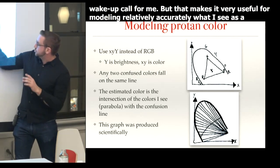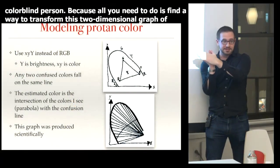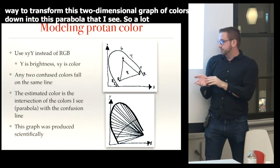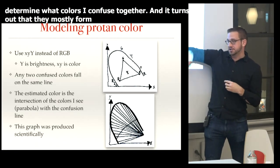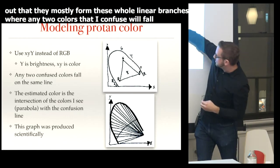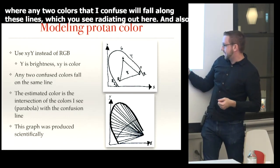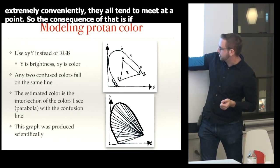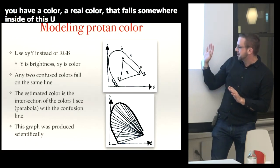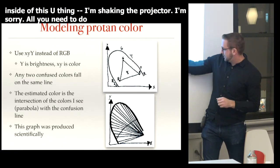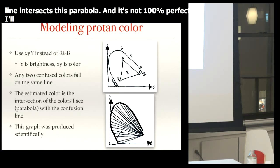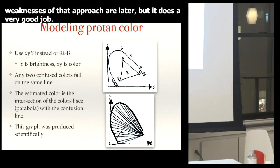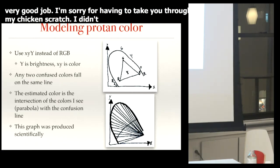What I see differently is that instead of seeing everything inside the U, I only see a single parabola that intersects it. Everyone else sees the world in two dimensions of color; for me it's collapsed down into one line. For anyone monochromatic — only one cone — it would just be a single dot. Vision researchers have done work to determine what colors I confuse, and it turns out they mostly form co-linear branches: any two colors I confuse fall along lines that all converge at a point. So all you need to do is take a real color, draw a line to that convergence point, and find where it intersects my parabola — giving you an estimate of the color I see.